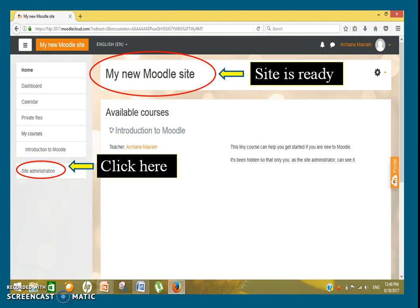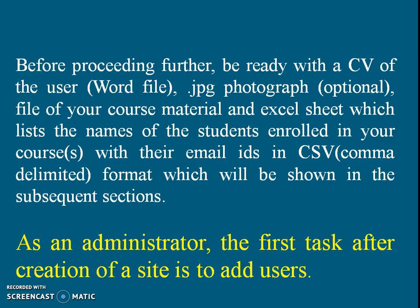Now your site is ready. For further procedures such as site administration, click on the 'Site Administration' button on the left-hand side of the screen. After creation of the site, the first task is to add users. Before proceeding further, be ready with a CV of the user in Word file format, a JPG photograph (optional), the file of your course material, and an Excel sheet listing student names with their email IDs in CSV comma-delimited format.